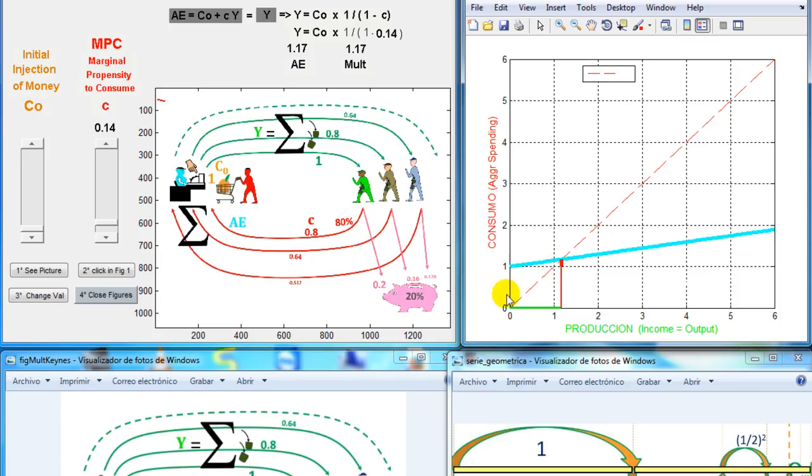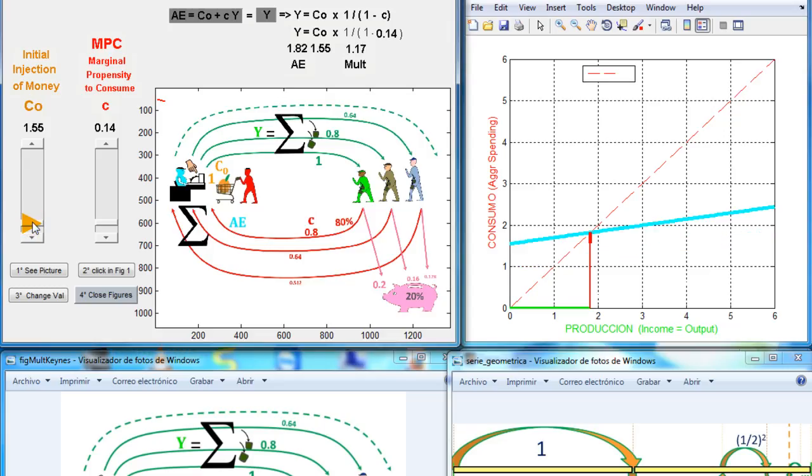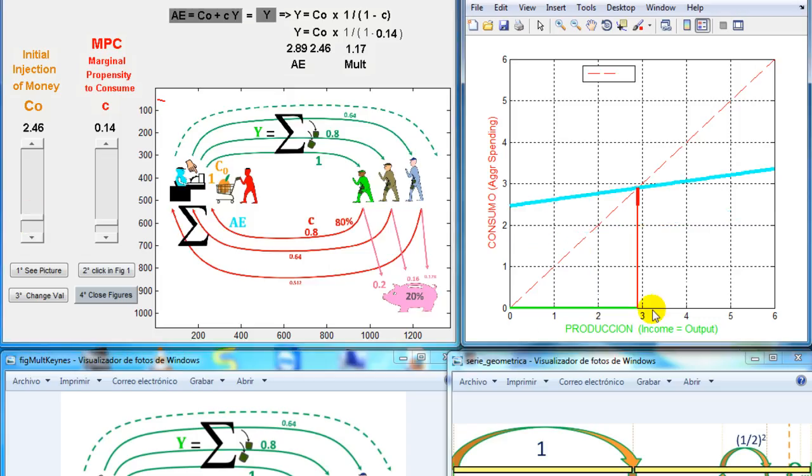So in this case, if we increase the initial expenditure, for example, instead of the initial injection of money or initial consumption, let's say there is a government expenditure. So we increase government expenditure, and then the GDP will grow, of course. But as you can see here, only 17% is the induced consumption. So it doesn't matter how much the government increases government expenditure. What we are going to have is just a little bit of increase, because this multiplier is very low.